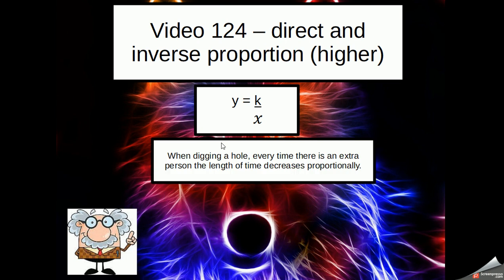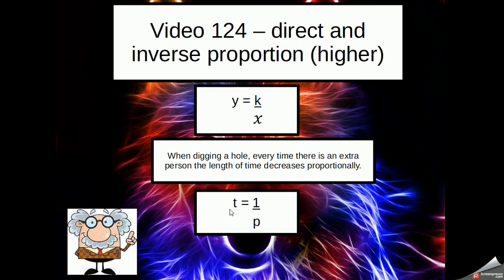So when digging a hole, every time there is an extra person, the length of time decreases. So we could represent that by t equals 1 over p. And here we can see in this example that as p increases, the time decreases. If the number of people was 2, time would be equal to a half, 1 divided by 2.